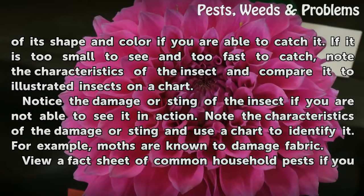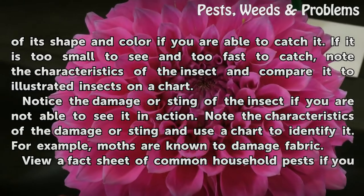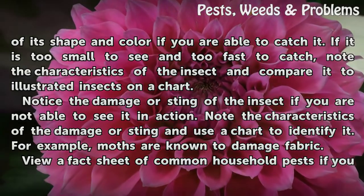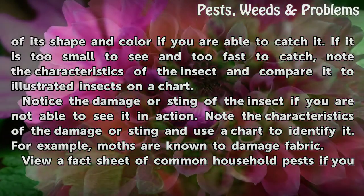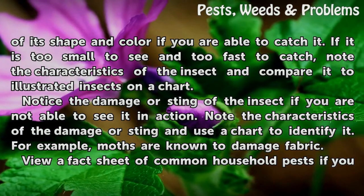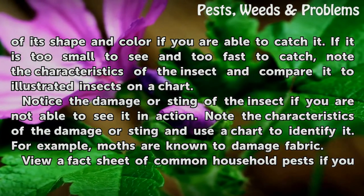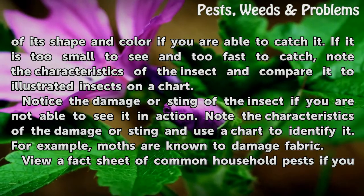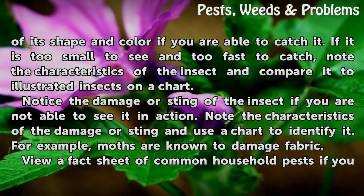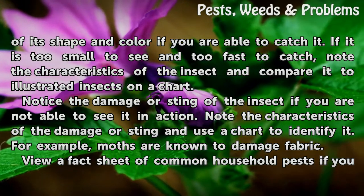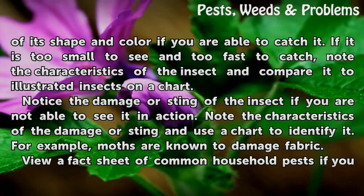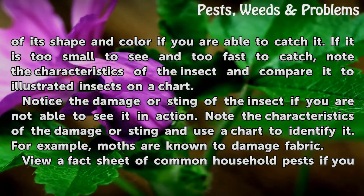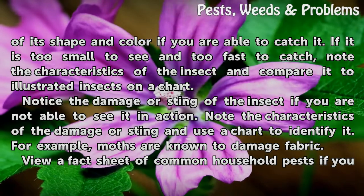If it is too small to see and too fast to catch, note the characteristics of the insect and compare it to illustrated insects on a chart. Notice the damage or sting of the insect if you are not able to see it in action. Note the characteristics of the damage or sting and use a chart to identify it.